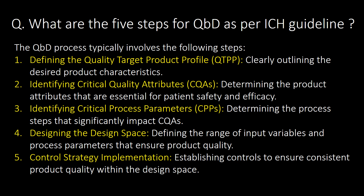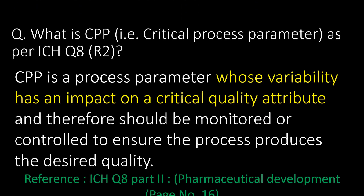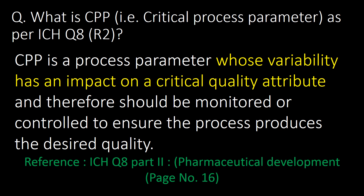What are the five steps for QbD as per the ICH guideline? The QbD process typically involves: step 1, defining the quality target product profile; step 2, identifying critical quality attributes (CQAs); step 3, identifying critical process parameters (CPPs); step 4, designing the design space; and step 5, control strategy implementation.